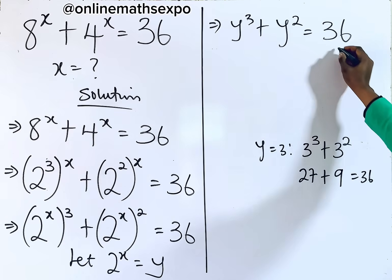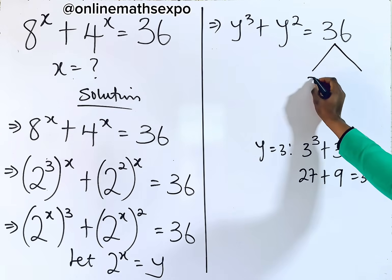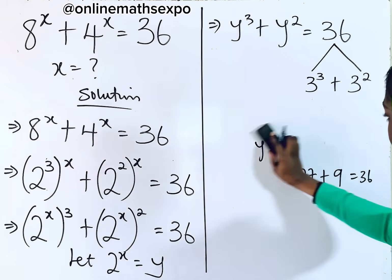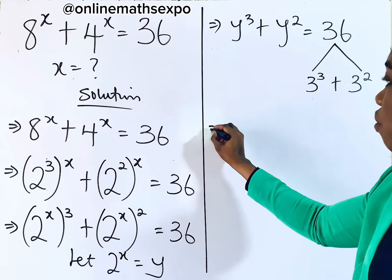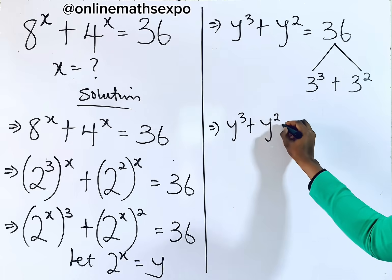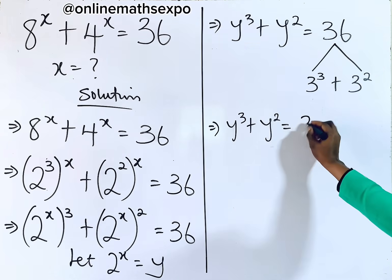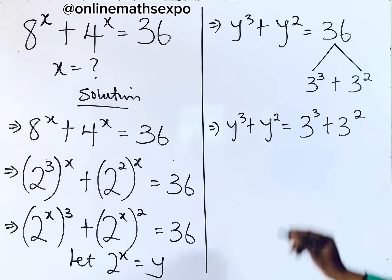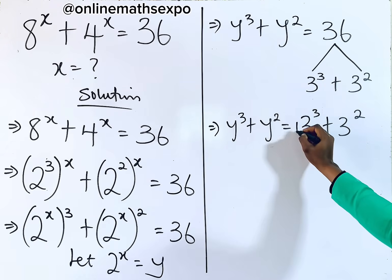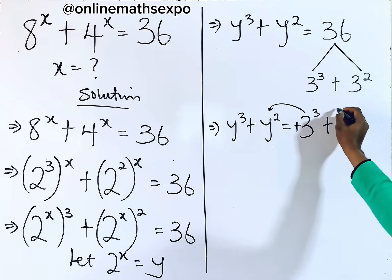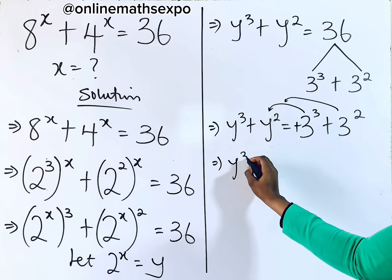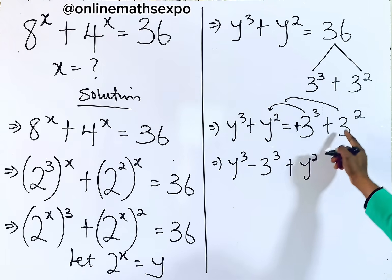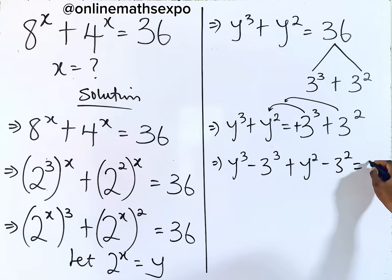So we are going to replace 36 with this value to help us solve. We have y cubed plus y squared equal to 3 cubed plus 3 squared. Taking the right-side values to the left side — remember these are positive — we get y cubed minus 3 cubed plus y squared minus 3 squared equals zero.